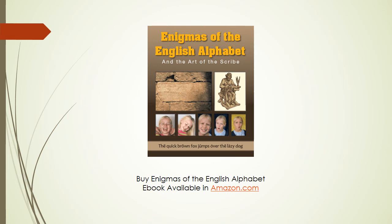We will explore in the next video how English evolved into its current spelling and how that affects the learning of English, particularly for foreign language speakers. You can also buy 'Enigmas of the English Alphabet' — the ebook is available on Amazon.com, which covers in more detail all the subjects discussed in this and upcoming videos. Thanks everybody!